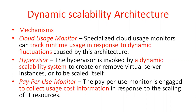One is a cloud usage monitor. A specialized cloud usage monitor can track the runtime usage in response to the dynamic fluctuations caused by this architecture — what are the dynamic changes in this system. The second mechanism is a hypervisor. The hypervisor is the link between the hardware and the virtual machine or operating system. It is invoked by the dynamic scalability system to create or remove virtual server instances to be scaled.